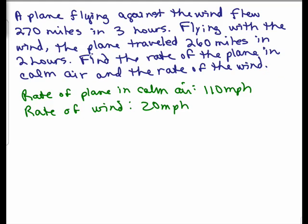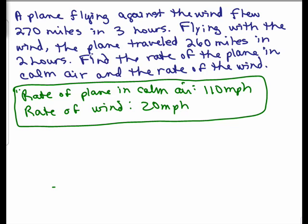Let's check it. So here's the original problem. Remember when we check our work, we're going to go back to the original words and see if it makes sense. We think the answer is 110 miles per hour for the rate of the plane in calm air and 20 miles per hour for the wind. It says flying against the wind, the plane went 270 miles in three hours.